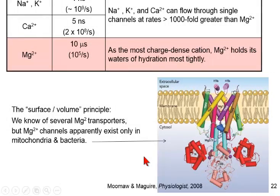We need a permeant ion needs to exchange waters of hydration rather rapidly. Sodium and potassium can do this every nanosecond or so. Calcium can do this every five nanoseconds or so, and they can flow through single channels at rates that are rather large. Magnesium cannot exchange waters of hydration very well. It takes a whole 10 microseconds for a magnesium ion to exchange its water of hydration. It's the most charged, dense cation. It holds its waters of hydration most tightly. Therefore, we can't use it for bulk flow through membranes. There are a few exceptions in which there are transporters, but no channels for magnesium. From basic physical chemistry, we now know how it is that cells do not use magnesium fluxes.